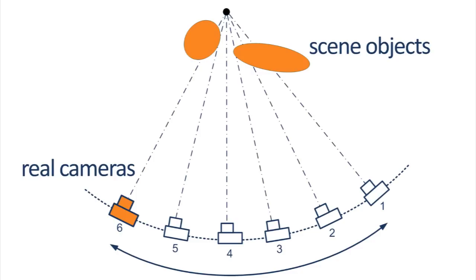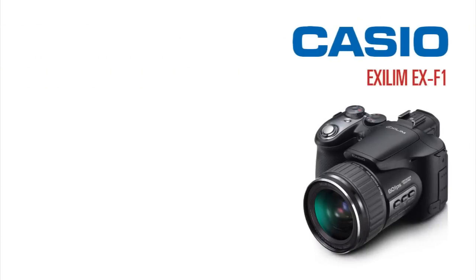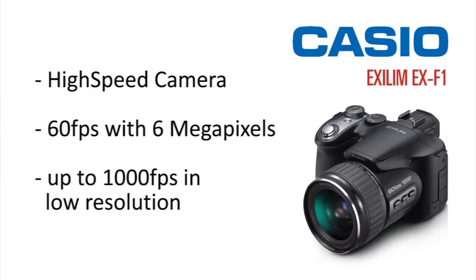Instead of two cameras, I put six cameras on a precisely adjustable camera rig from Stereotech. We took one shot from a fast movement and synthesized a circular camera movement of about 35 degrees. We call this massive frozen reality 2.0, which is based on the frozen reality standard from Stereotech. Casio provided us with the Exilim F1, a high-speed camera which can do 60 frames per second at a resolution of 6 megapixels.